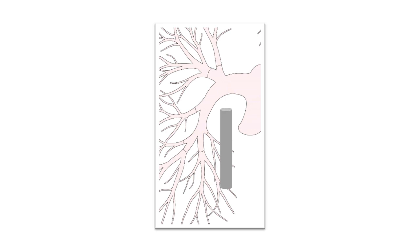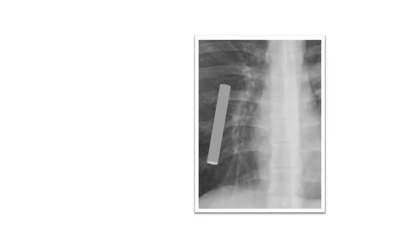Blood vessels have the shape of cylinders and course in various directions. If the course of the blood vessel is vertical, then we can predict that the radiological shape will be a rectangle. On this x-ray examination, adjacent to the right heart border, we see vertical white rectangles, which represent branches of the right pulmonary artery.